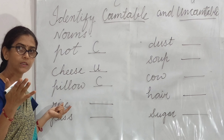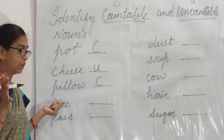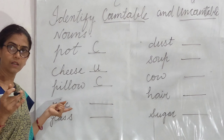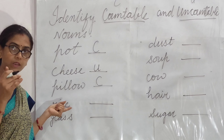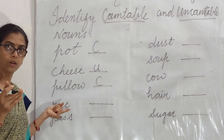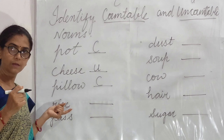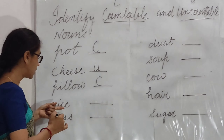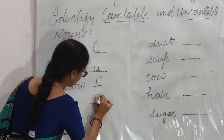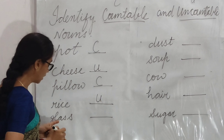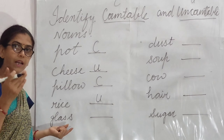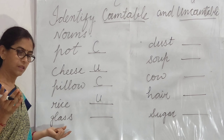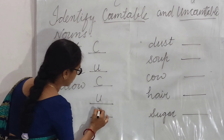Rice — ab chawal. Chawal ko aap count kar saktay hain? No, it's not possible. We can use expressions with this noun — one bag of rice. So this is uncountable, write U. Glass — glass ka plural form banaate hain: glasses. So this is countable, write C.